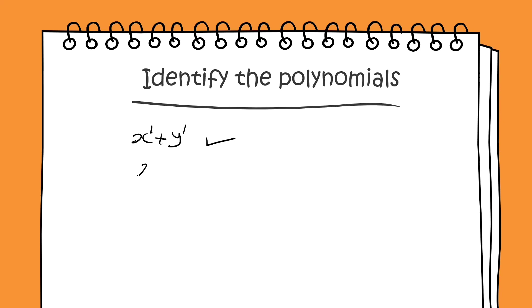Now, if I have 2x plus 3 by y. If I see this particular expression, the power of x is 1. y is in the denominator, so the power of y is minus 1. Therefore, this expression is not a polynomial.